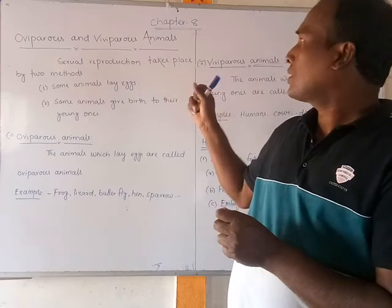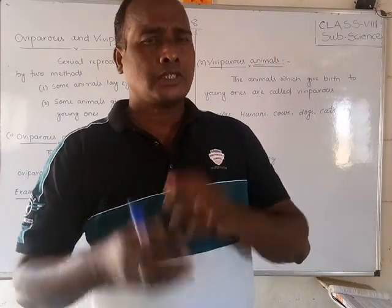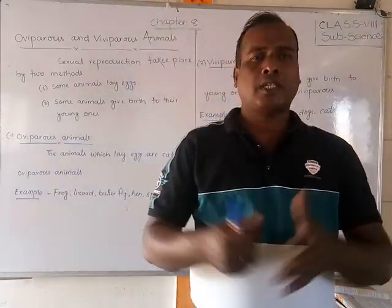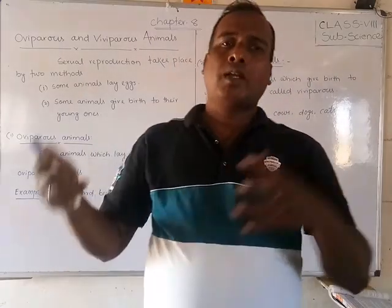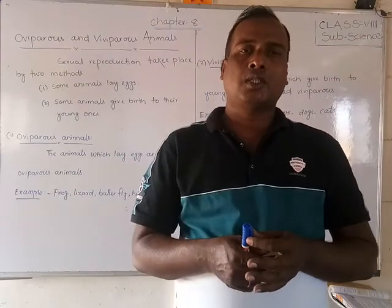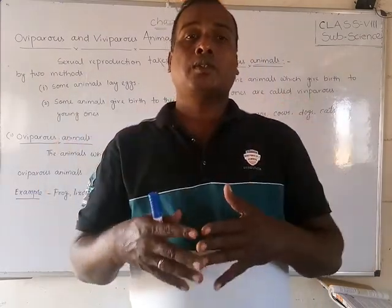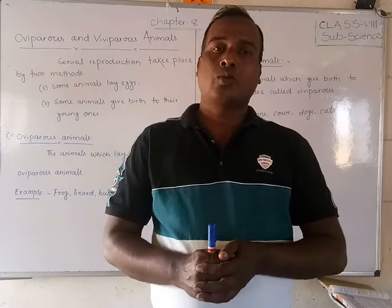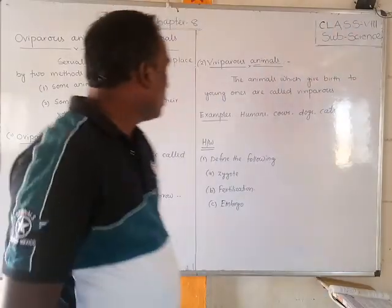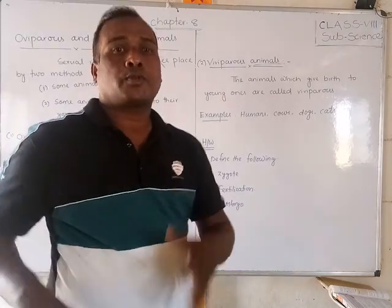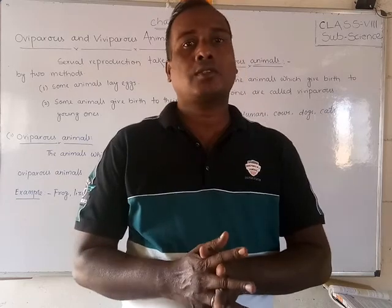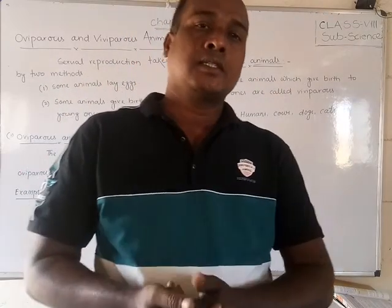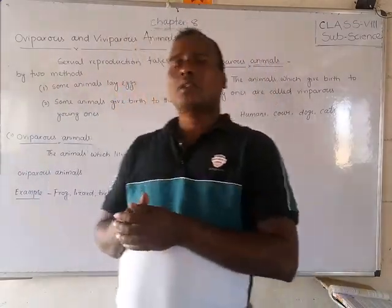Today we are going to discuss oviparous and viviparous animals. Sexual reproduction takes place in two methods. When the zygotes are forming — the male and female gametes combining and producing zygotes — the animals can produce new ones in two different ways.